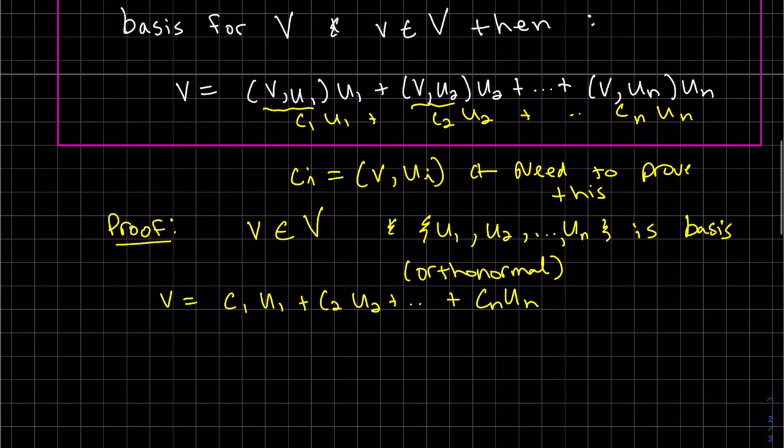So v can be written as a linear combination, that's just definition of vector space. So v can be written as c1u1 + c2u2 + ... + cnun. We'll keep that in mind. Now let's look at the inner product v·ui. I'm just choosing ui, and now the only thing I can do is substitute this v with all of that.